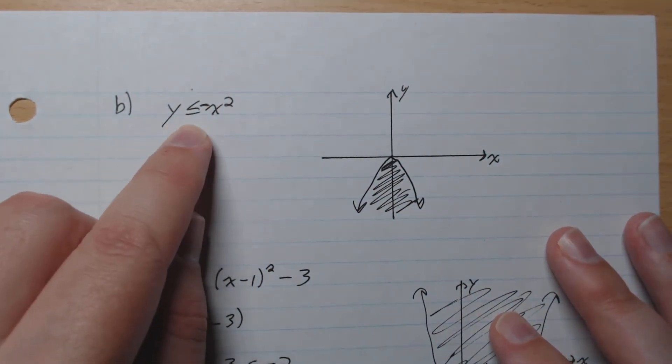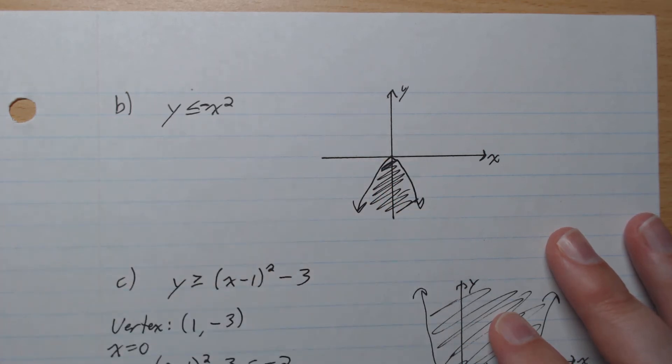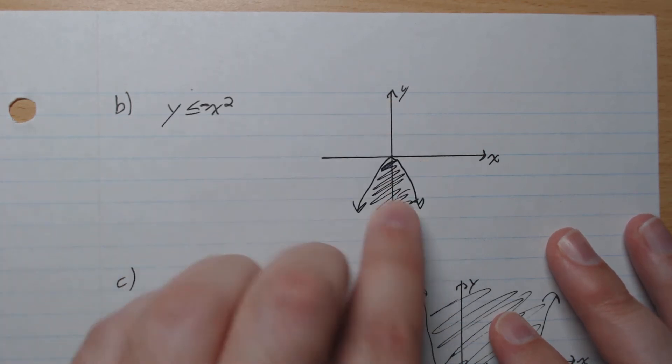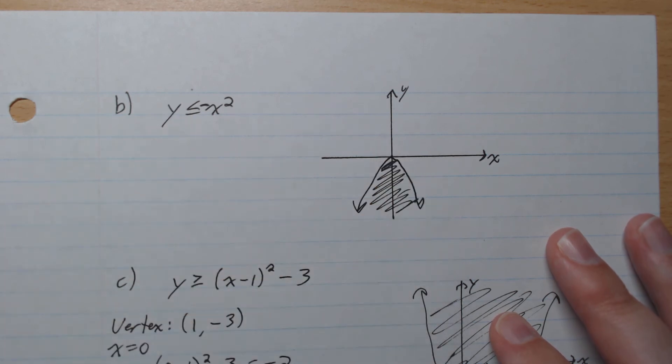B, y is less or equal to negative x squared. So negative x squared, graphs like this. It is below it, so underneath like that. And it's allowed to be equal, so it's a solid boundary line like that.